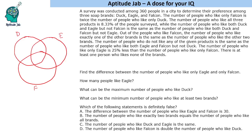There are a total of 360 people. The number of people who like all three products is 8.33%, which means 1/12. So 1/12 of 360 is 30. So all three is 30.